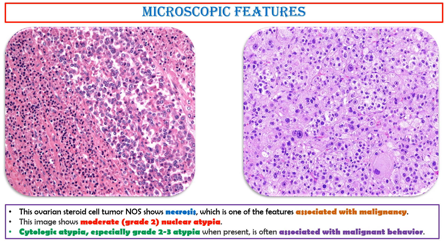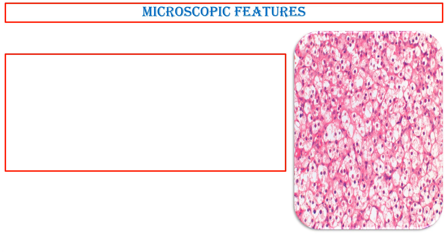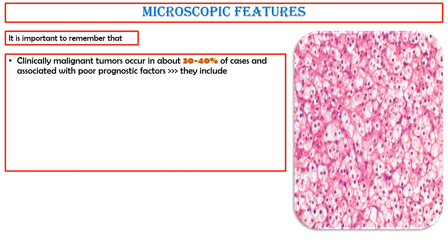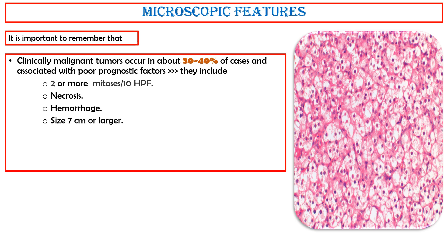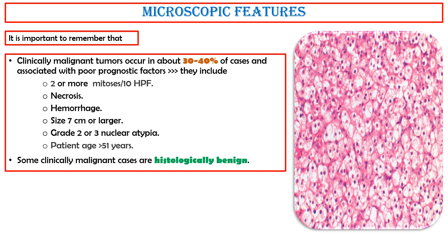Cytologic atypia, especially grade 2 to 3, when present, is often associated with malignant behavior. It is important to remember that clinically malignant tumors occur in about 30 to 40% of cases, associated with poor prognostic factors. These include two or more mitoses per 10 high-power fields, necrosis, hemorrhage, size 7 cm or larger, grade 2 or 3 nuclear atypia, and patients aged more than 51 years. Some clinically malignant cases are histologically benign.